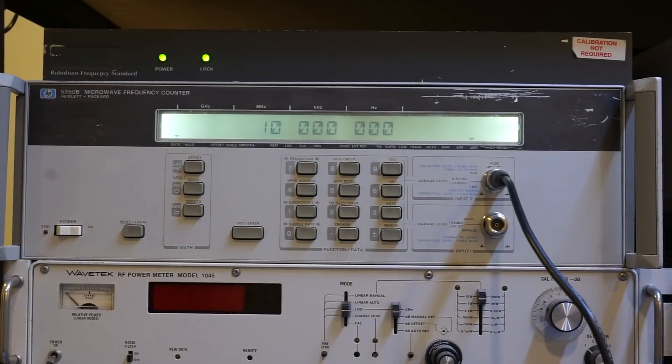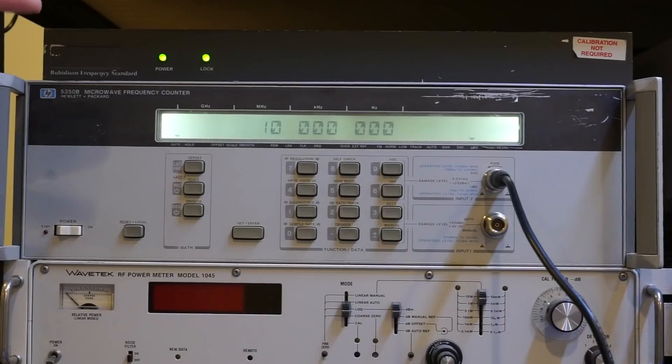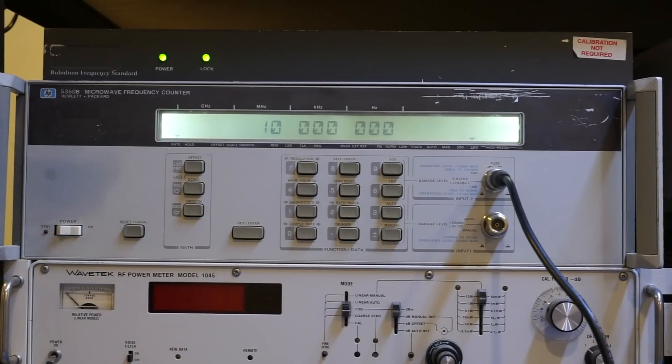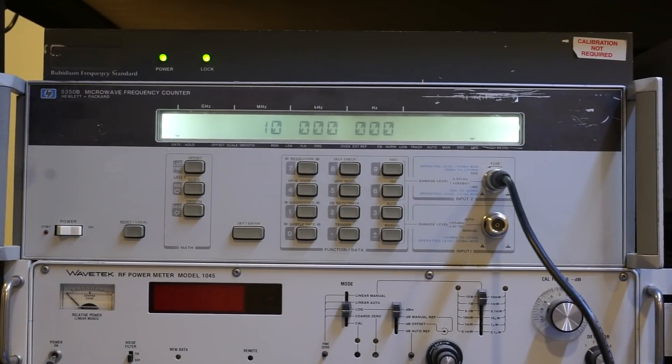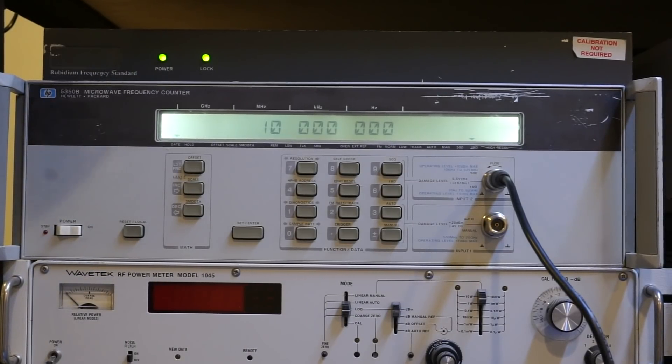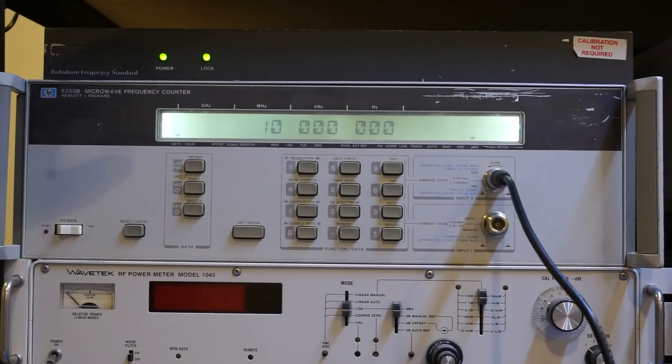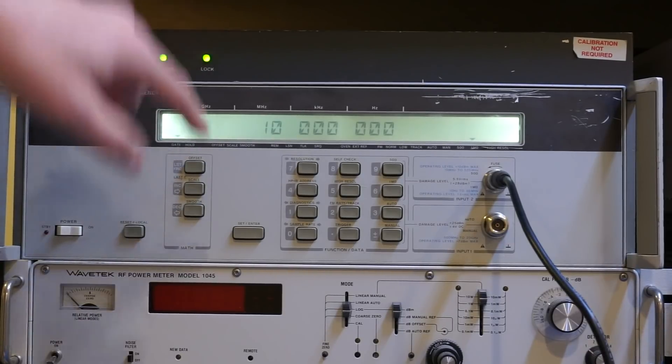And before I forget, let's also check the frequency readings in the high-resolution mode. The HP 5350B has a high-resolution mode, and depending on the frequency range, you can get up to 1 mHz of resolution. And for the 10 MHz frequency that we're measuring right now, the high-resolution mode can give you one extra digit of resolution.